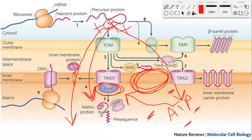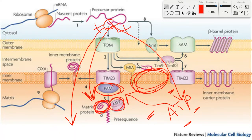If the mitochondrion is healthy and the protein is successfully imported, that N-terminal pre-sequence that's positively charged gets cleaved off by MPP, or mitochondrial processing peptidase.